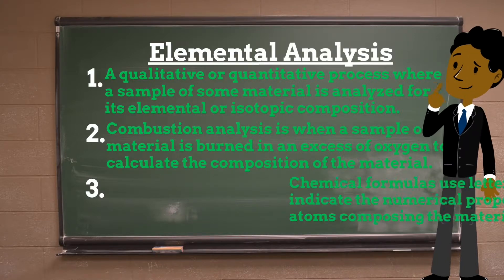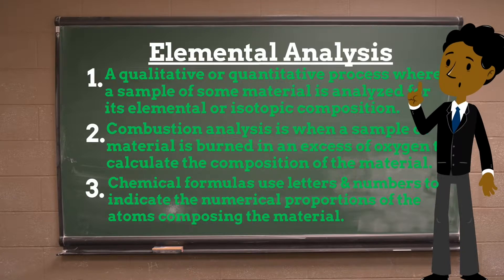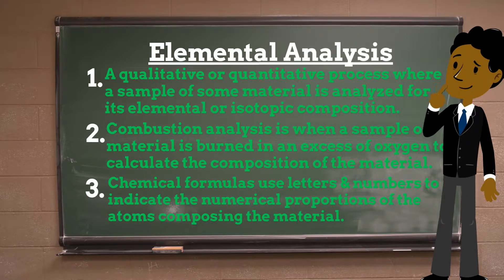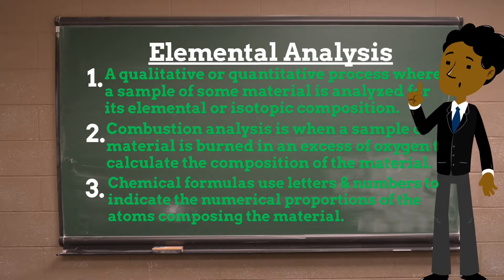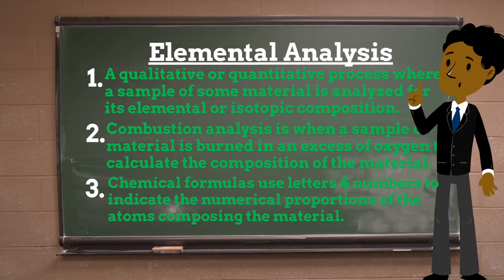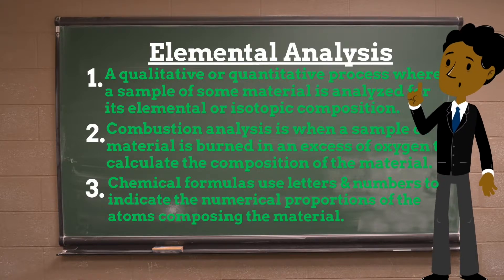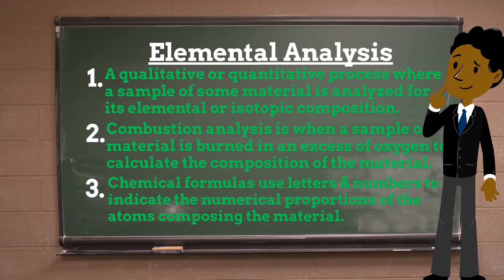A chemical formula conveys information about the chemical proportions of atoms that constitute a particular chemical compound or molecule, using chemical element symbols, numbers, and sometimes other symbols such as parentheses, dashes, brackets, commas, and plus or minus signs. A chemical formula is not a chemical name and it contains no words.